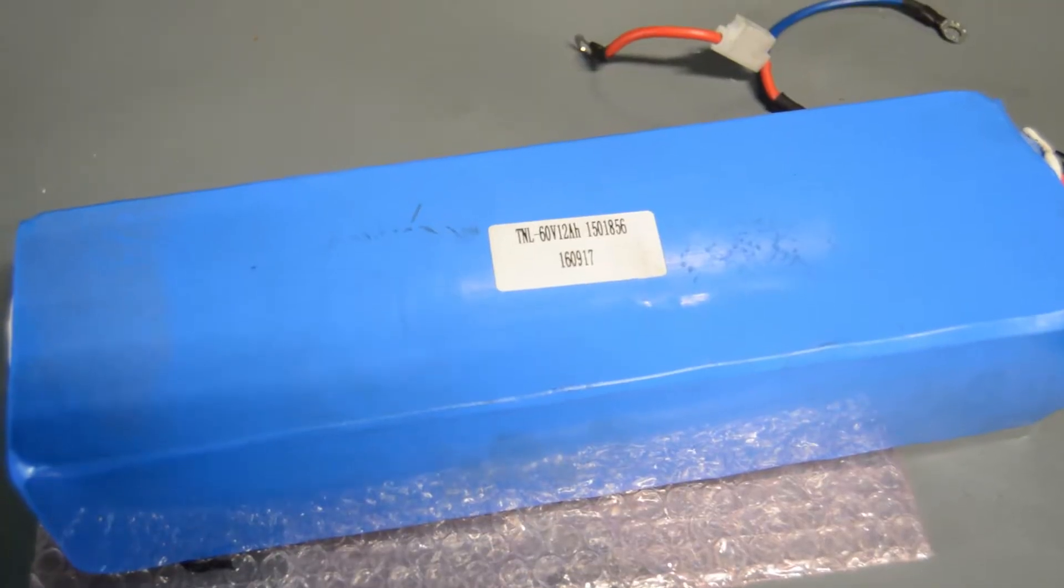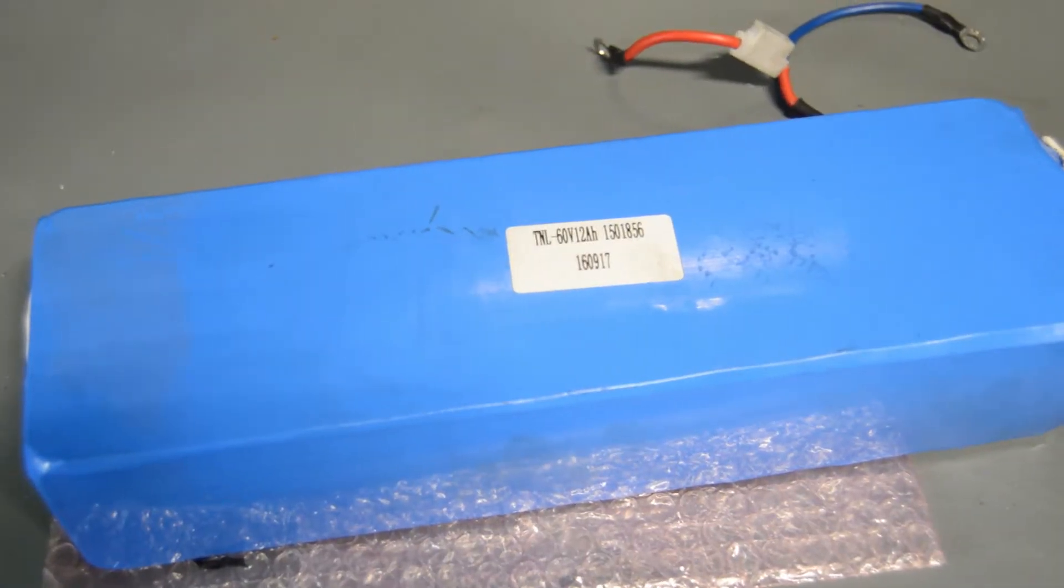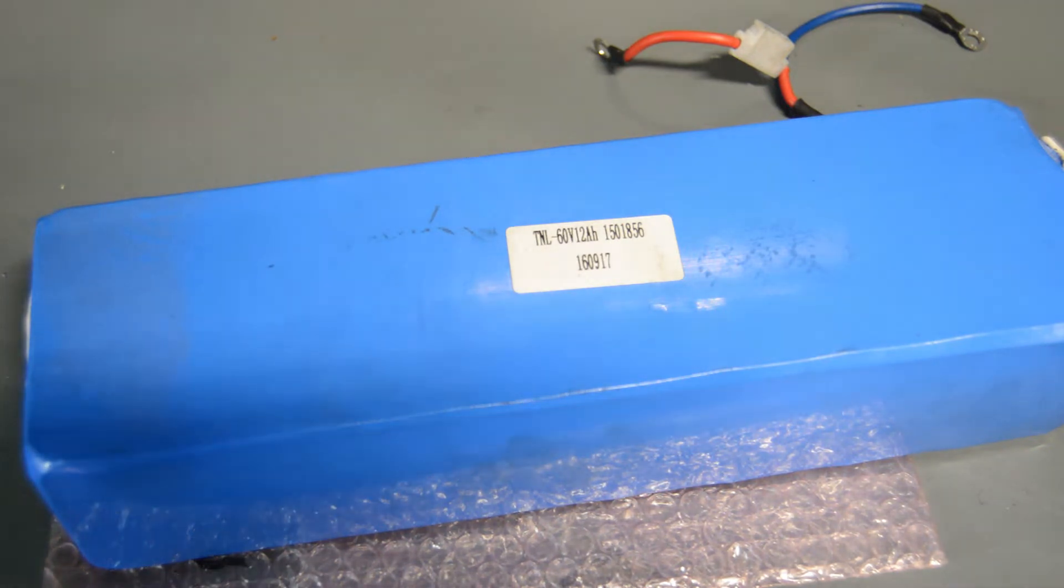So what I think would be nice is if we disassemble this factory pack and we see what we can see inside in terms of construction, and then also what kind of condition and quality the cells are.